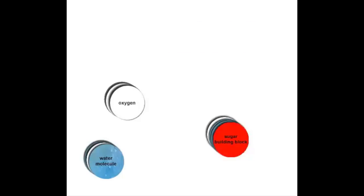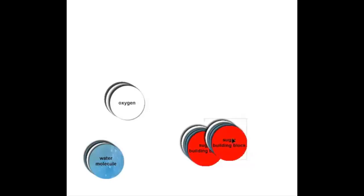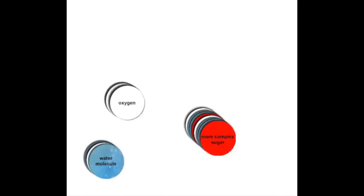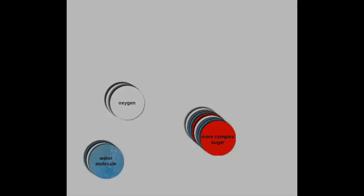Those carbon-hydrogen bonds can be stored and used by the plant, or used by anything that eats the plant. When two sugar building block molecules are combined, they can go through a reaction to form a more complex sugar. That process can be repeated to form more and more complex sugars — that's what the plant's body is made out of, and also what the plant uses for matter and energy to live.